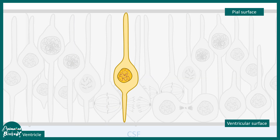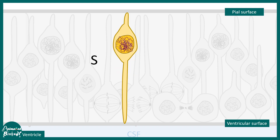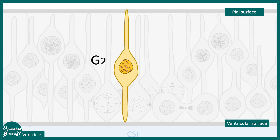Let us try to understand this process in a bit more detail. This is how radial glia look at the interface. In the G1 phase, the cell body of the radial glia is up above from the ventricular surface. At the S phase, it is quite close to the pial surface. But from G2 phase, these cell bodies start descending downwards.